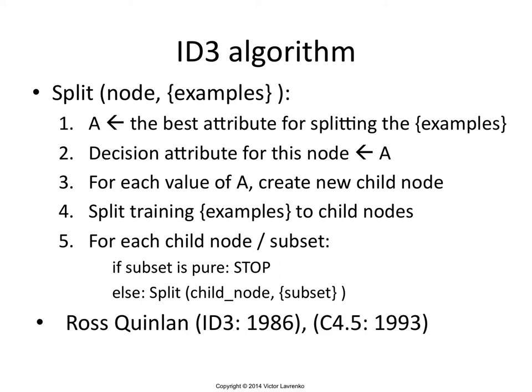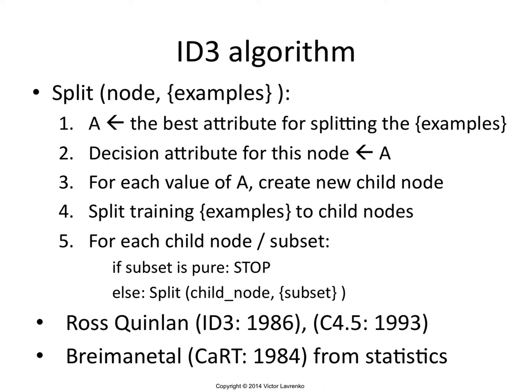It was discovered independently by two people. In computer science, it was Ross Quinlan in 1986, who came up with the first formulation called ID3, and then in 1993 C4.5, which is pretty much the standard used up to this day. It was independently discovered by Breiman in the field of statistics — it had a very different name and was more focused on regression, whereas Quinlan focused more on classification, but it's pretty much the same idea.